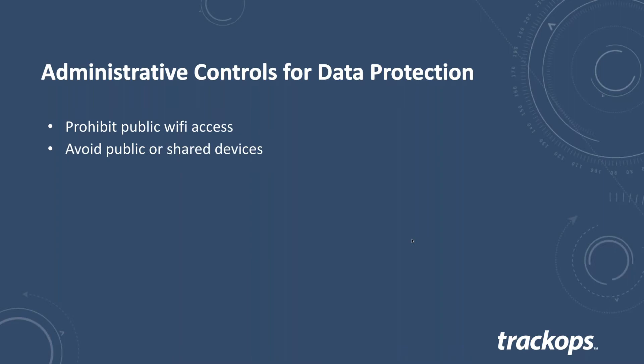Avoiding public and shared devices: at a library or similar location, you don't know who's been on that device before you or who will come after you. Someone could have installed a keylogger before you arrived — when you try to sign into your email, QuickBooks, or whatever, they can lift your keystrokes and identify your password. If you do access a public device, don't log into any sensitive accounts. If you need to log in, don't use a public device.